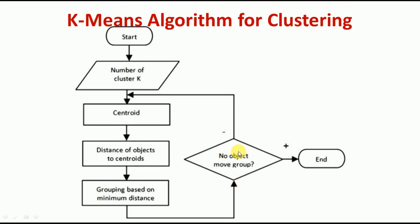We then check one condition: whether the data points are moving from one cluster to another. If they are moving, it means they have not yet stabilized — we go back, find the new centroid, calculate the distance between the data points and the new centroid, and again group the data points based on minimum distance. We check again whether the data points are moving. If they are still moving, the same steps are repeated. If they are not moving, the clusters have stabilized and we stop the algorithm.